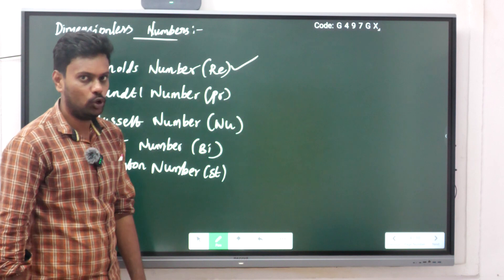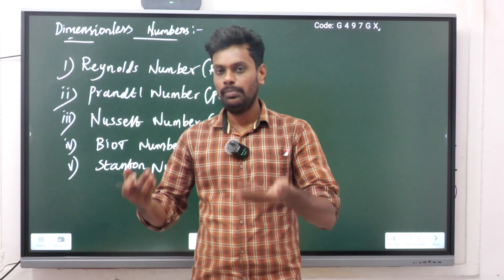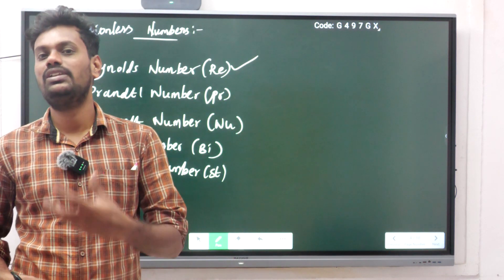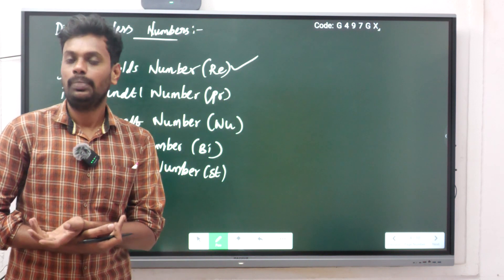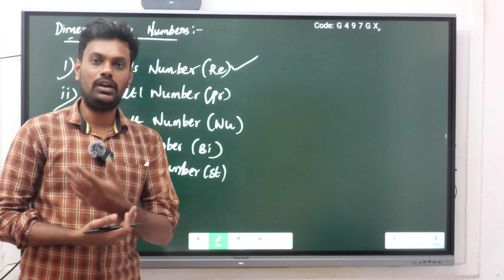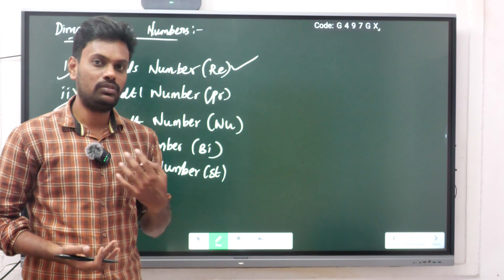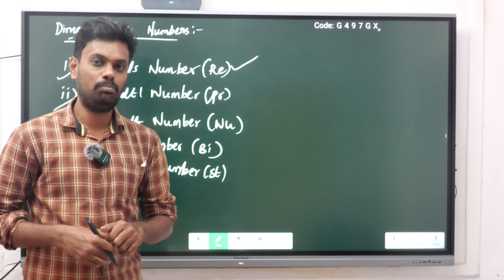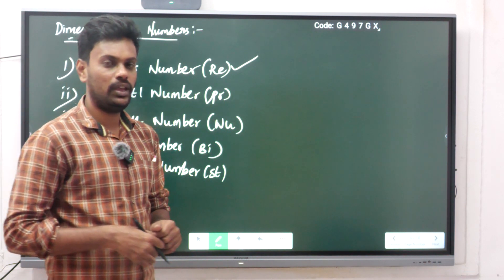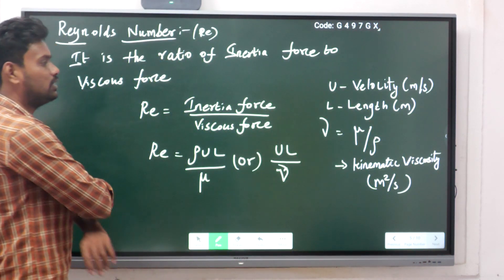For each dimensionless number, I will first give the definition, then the formula, and then the significance — meaning what is the use of studying that particular number and what role it plays in convection applications. The first number is the Reynolds number.